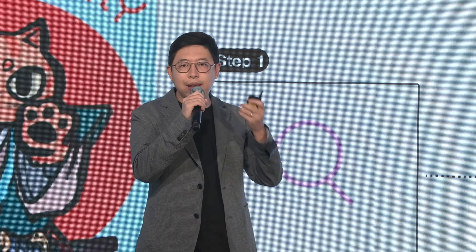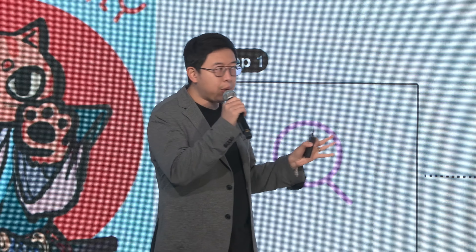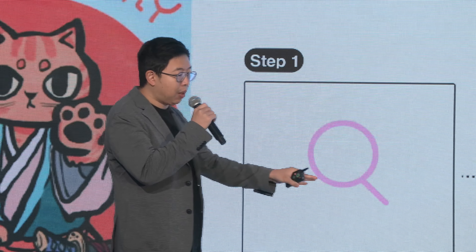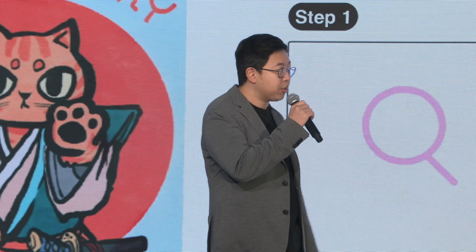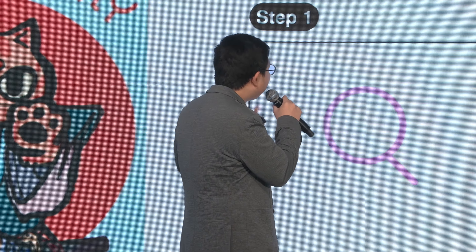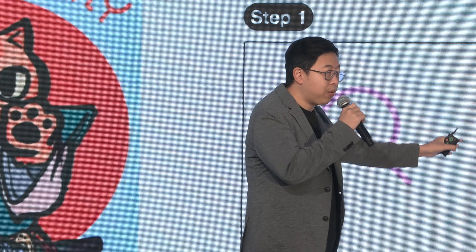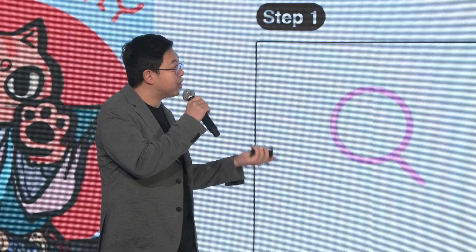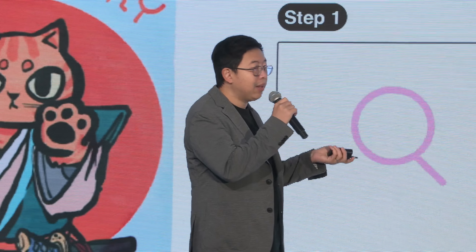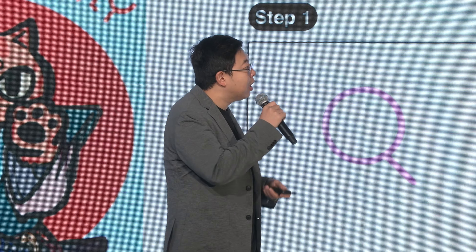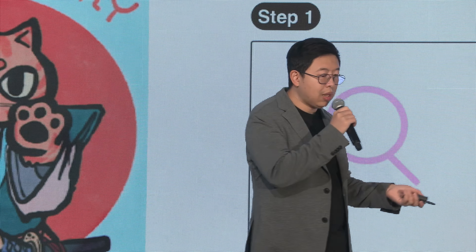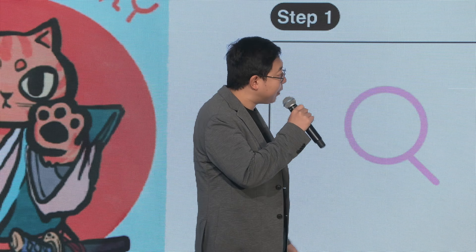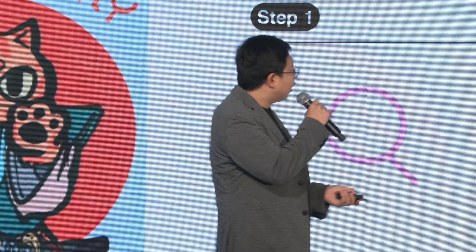Developers can now use Brevis in three very simple steps: first, read data; then do the computation; and finally verify the data on-chain. To read data, there are many things you can read in Brevis from the smart contract directly, including storage state, blockchain information, and receipts — which are basically swap events —